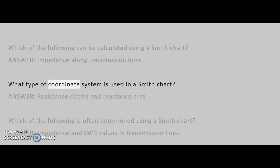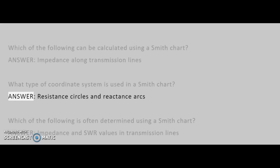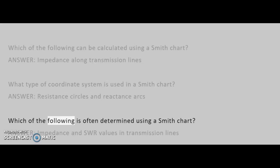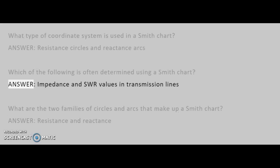What type of coordinate system is used in a Smith chart? Answer: Resistance circles and reactance arcs. Which of the following is often determined using a Smith chart? Answer: Impedance and SWR values in transmission lines.